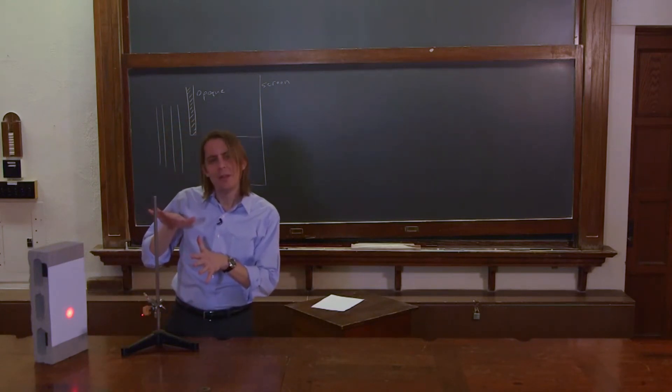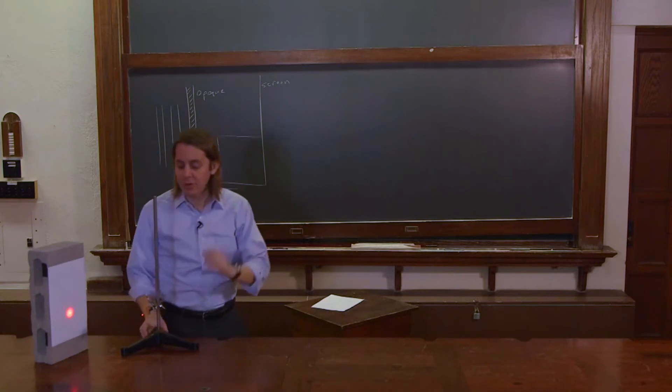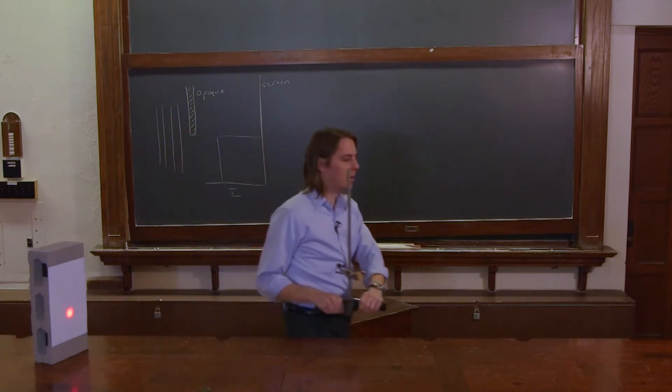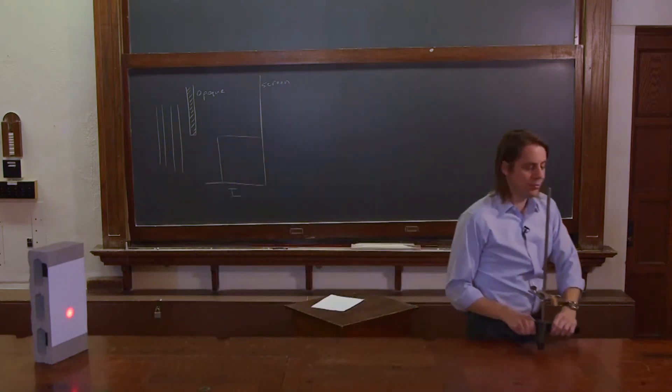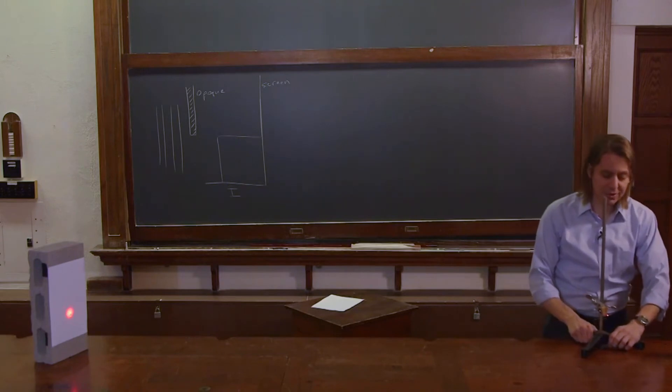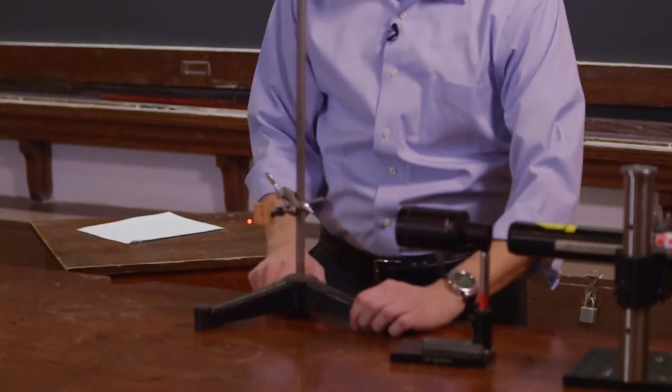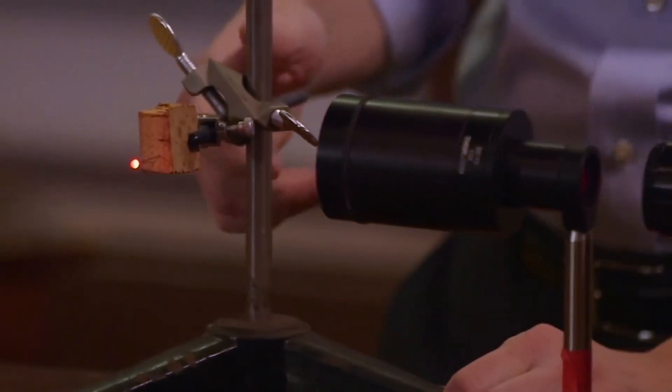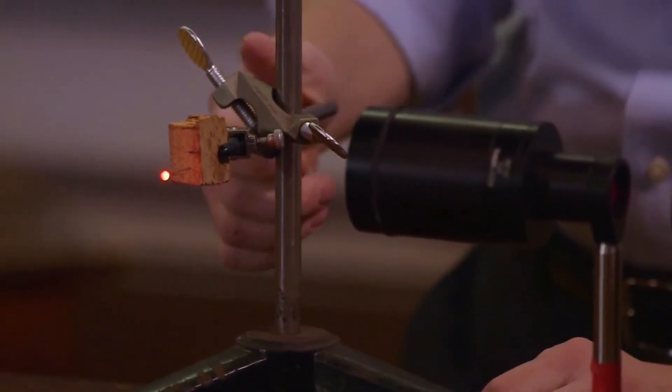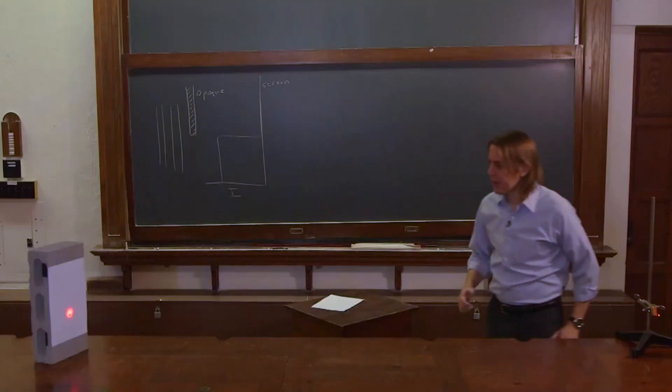But maybe the light turns a corner, but not very much. So let's put this really far away. So if this laser is really well collimated and the light really is going in a straight line, then we should also get a sharp shadow when we put it here. So I'll put it here and get it a little higher and see what happens.